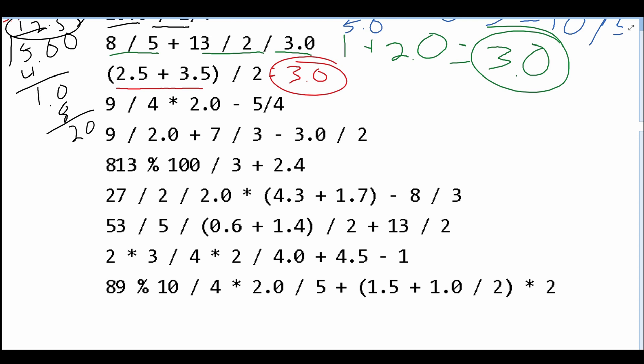Next, we have 9 divided by 4, which gives us 2. We're multiplying this by 2.0, so we get 4.0. Then we are subtracting 5 divided by 4, which will be 1. So our answer here is going to be 3.0.